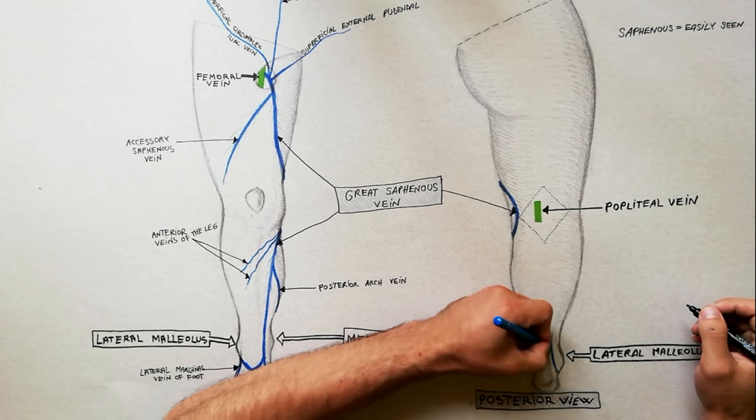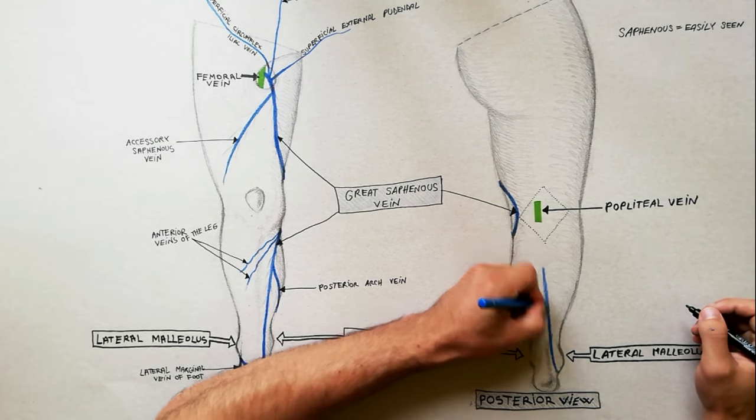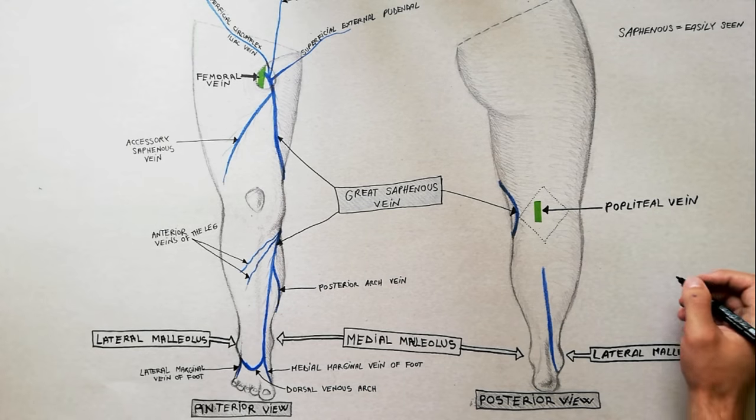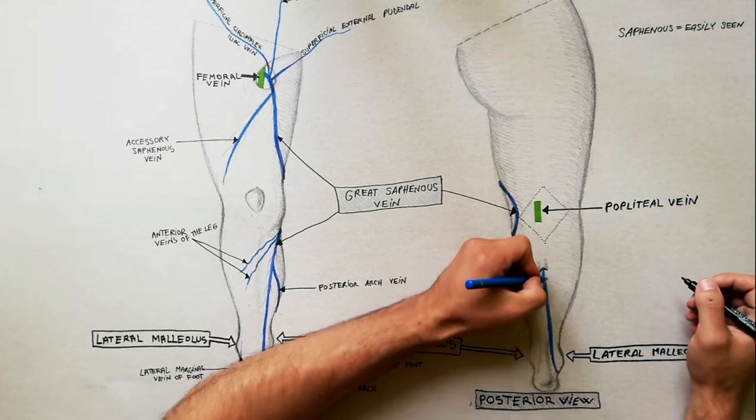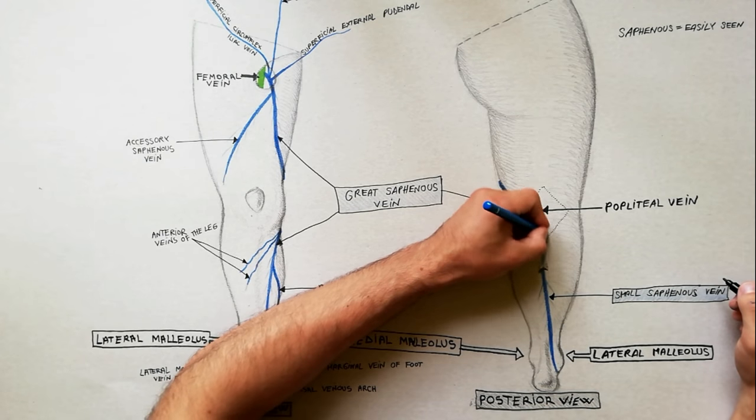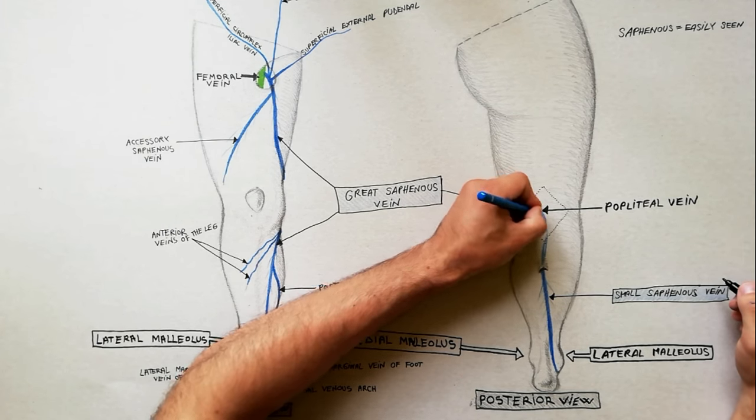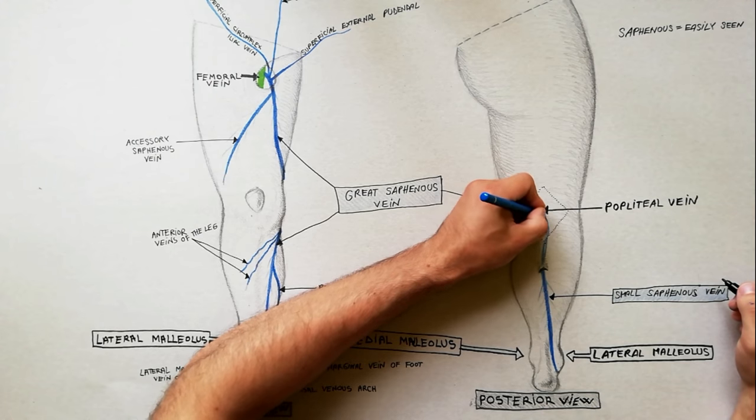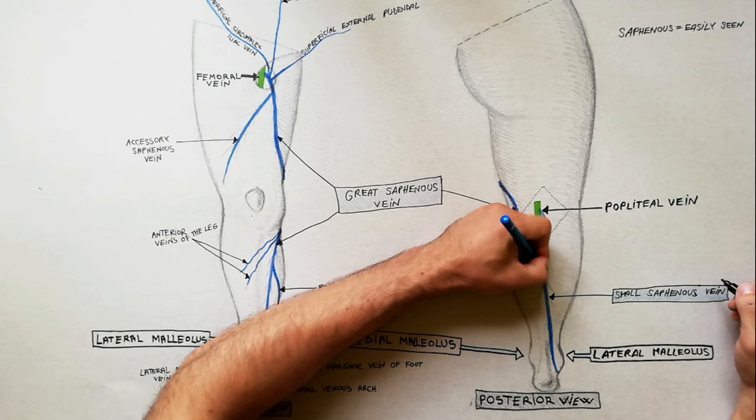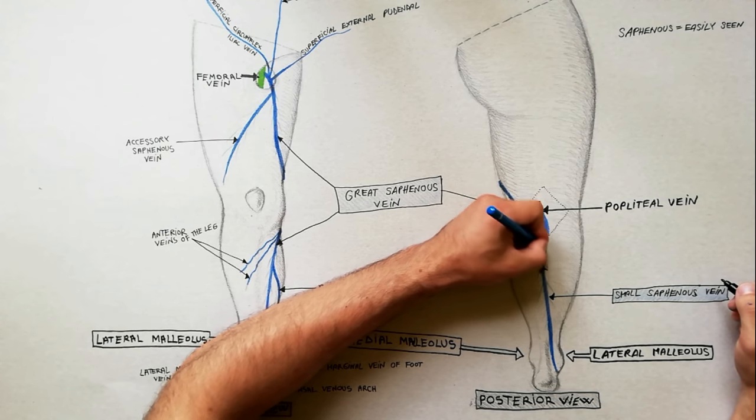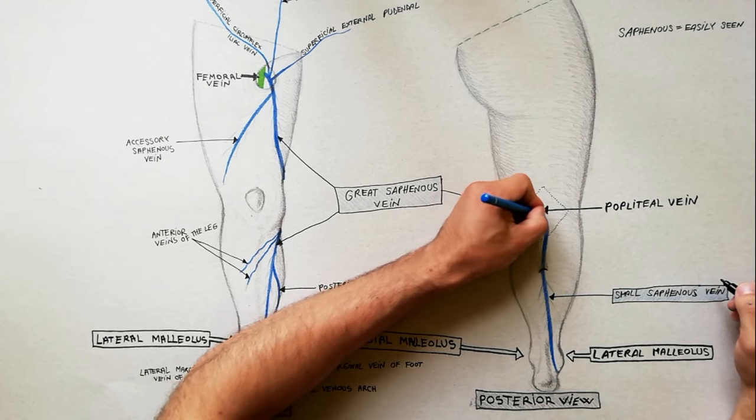It runs upward, behind the lateral malleolus. Thereafter, it runs in the middle of the back of the leg, pierces the deep fascia, and undergoes a subfascial course between the two heads of the gastrocnemius, until it reaches the middle of the popliteal fossa. Here, it turns inward to terminate into the popliteal vein.